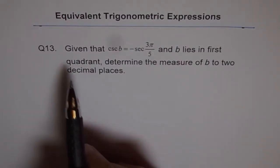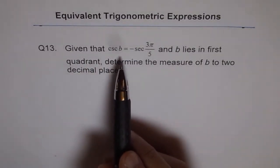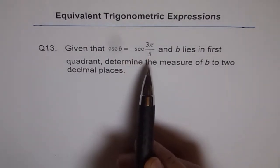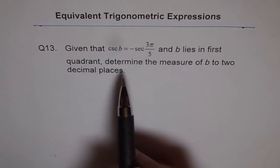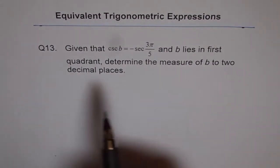Question 13. Given that cosecant b equals minus secant 3π/5 and b lies in first quadrant, determine the measure of b to two decimal places.